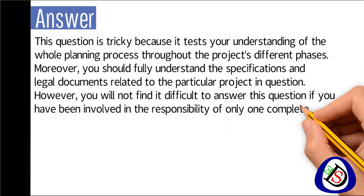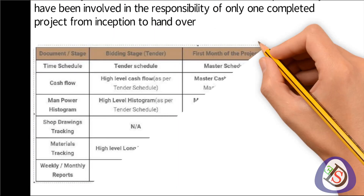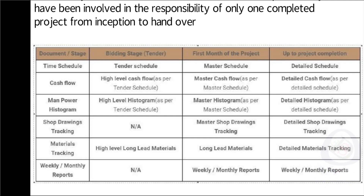You will not find it difficult to answer this question if you have been involved in only one completed project from inception to handover. Here is a table with four columns: Document, Bidding Stage, First Month of the Project, and Up to Completion. The first row covers time schedule: tender schedule, master schedule, and schedule. The second row covers cash flow: high-level cash flow as per tender schedule, master cash flow as per master schedule, and detailed cash flow as per detailed schedule.